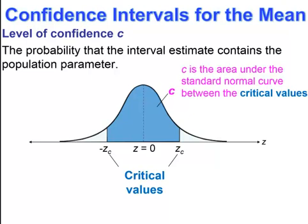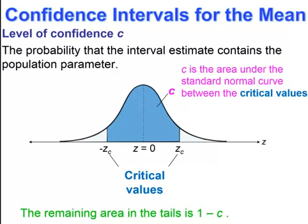In order to find the critical values, the area needs to be shaded all the way to the left. Because it's between two z values, you need to find what that tail equals. The total area under the normal curve equals 1, so to find the remaining area in each tail, we take 1 minus our level of confidence, then divide by 2 because there are two tails. That tail equals (1 minus the level of confidence) divided by 2.